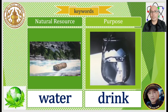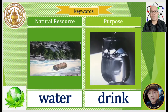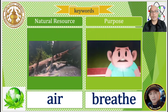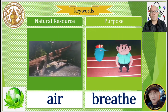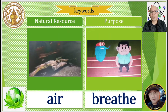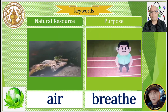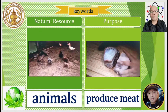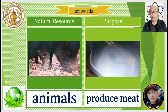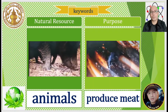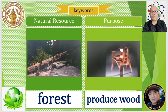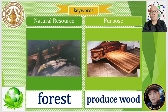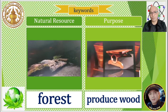Our keywords are: Water — we drink water. Air — we breathe air. Animals — animals produce meat. Forest — forests produce wood.